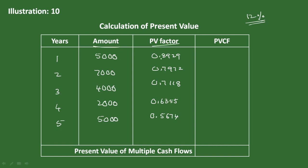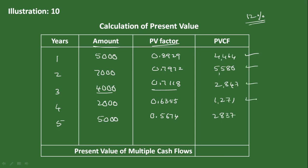Multiply each amount by the present value factor: you get 4,464, then 5,580, then 4,000 into 0.7118 gives 2,847, fourth year 1,271, and last year 2,837. Find individual present values and total them — you will get 17,000 rupees. This is the present value for multiple cash flows.